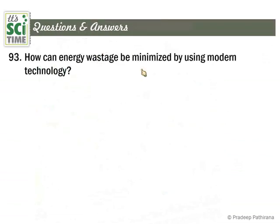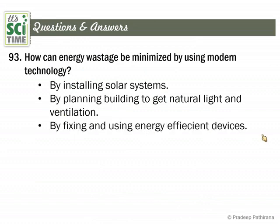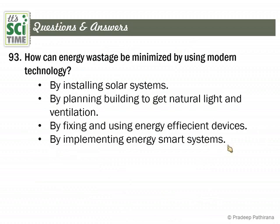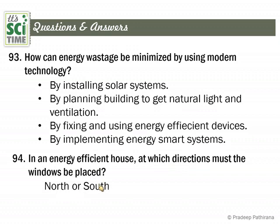Questions: How can energy waste be minimized using modern technology? By installing solar systems; by planning buildings to get natural light and ventilation; and by fixing and using energy-efficient devices or implementing smart energy systems. Question 94: In an energy-efficient house, at which direction must windows be placed? If windows are placed east and west, the house will get more heated. The best placement is north and south — do not keep windows facing east or west.